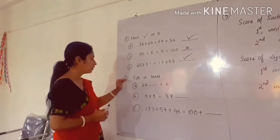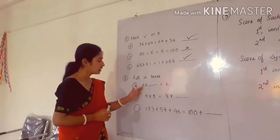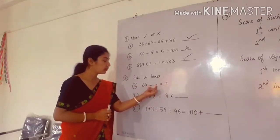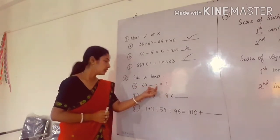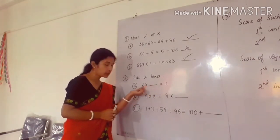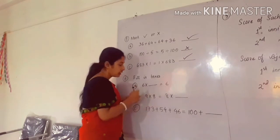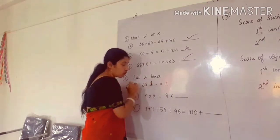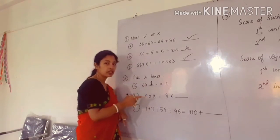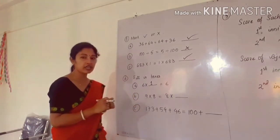Come to question number 2. You have to fill in the boxes. Number A: 6 into blank is equal to 6. What number should you multiply to 6 to get 6 again? We will multiply by 1. When we multiply 1 by 6, we will get the same number again, 6. This is called the multiplicative identity.